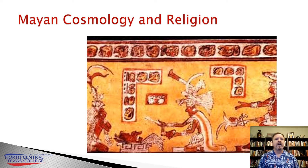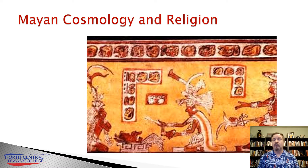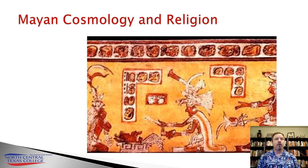For example, the primary direction — the east — was associated with the rising sun and symbolized by the color red. The west, where the sun sets, was linked with the underworld, and its associated color was black. North was connected with the ancestors and death, and the color white. The south was associated with the sun and yellow.